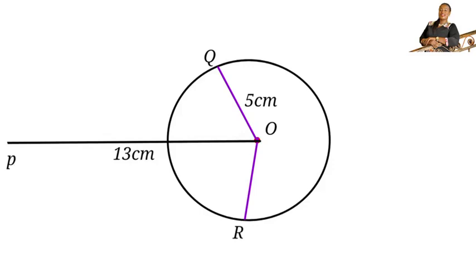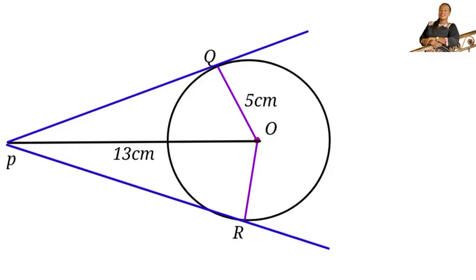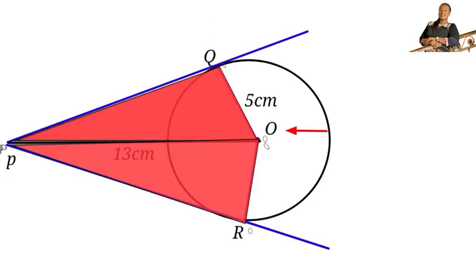Now from external point P we draw two tangents to the circle. This touches the circle at Q and R. We are required to find the area of the quadrilateral PQOR. Can you solve it?